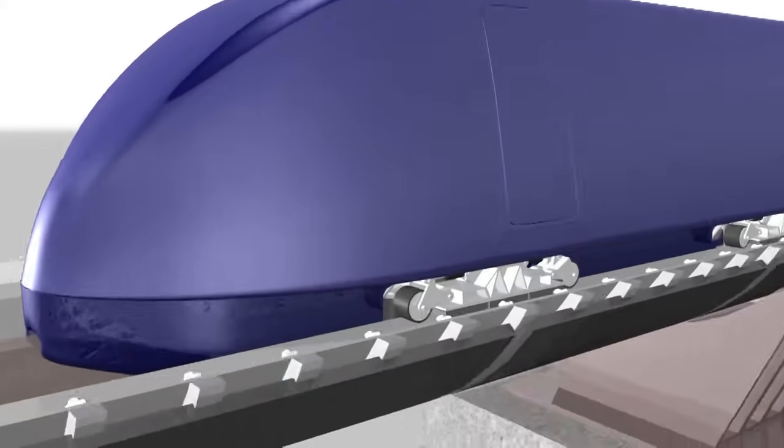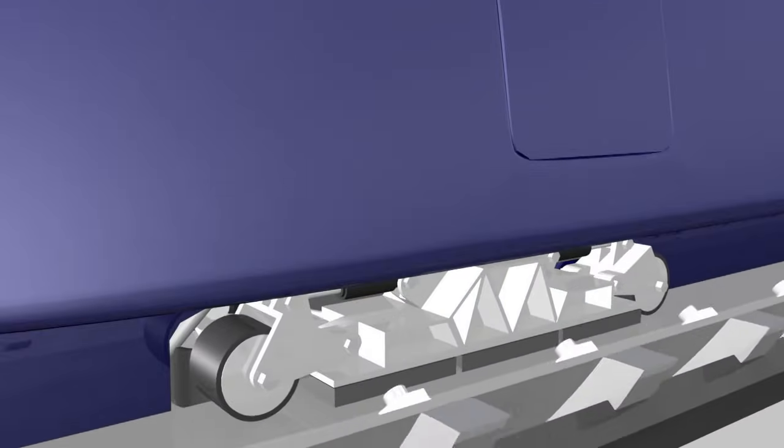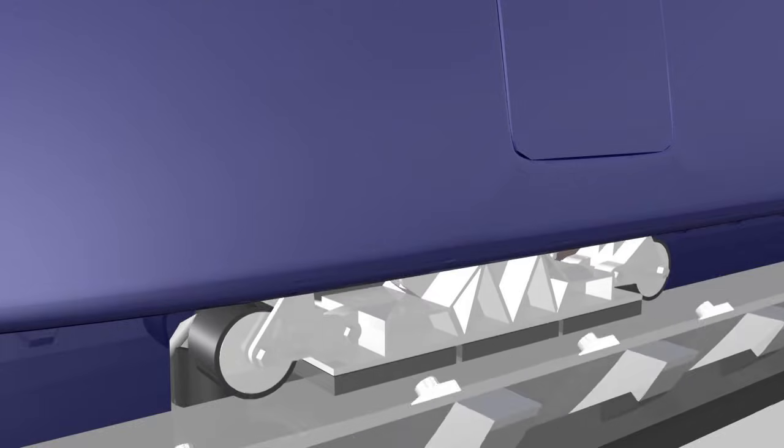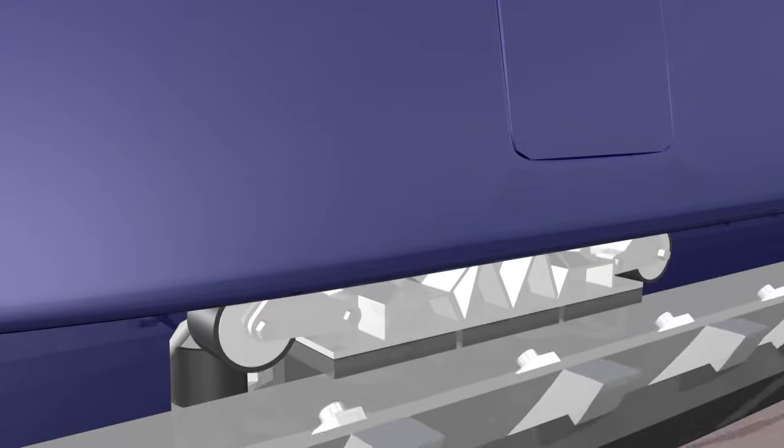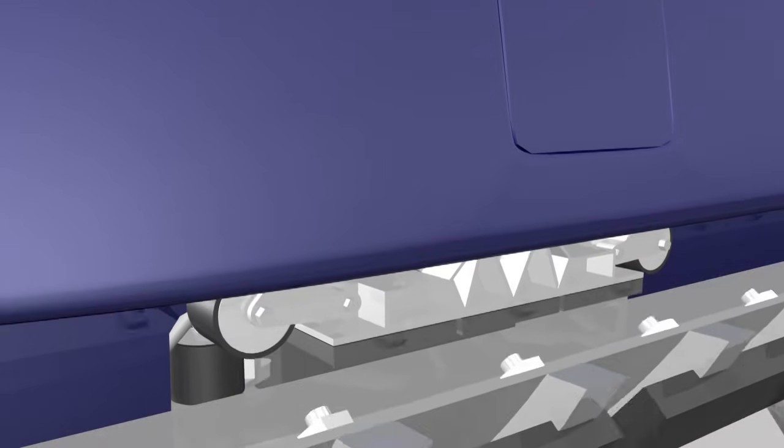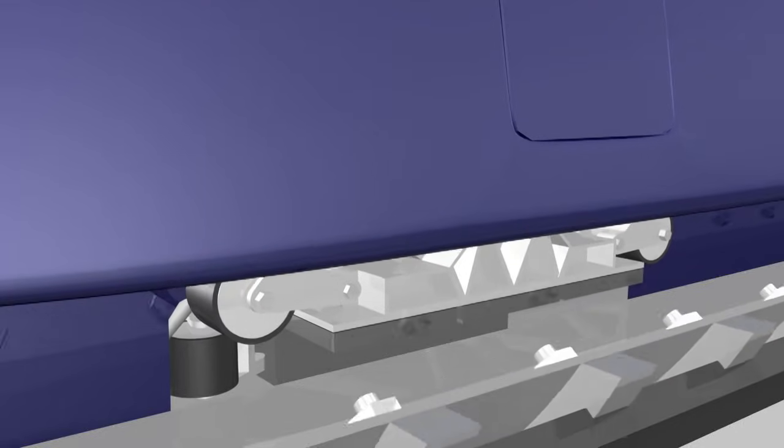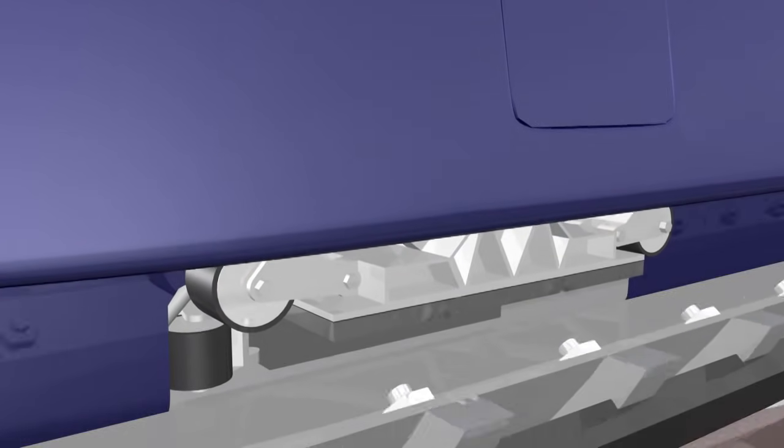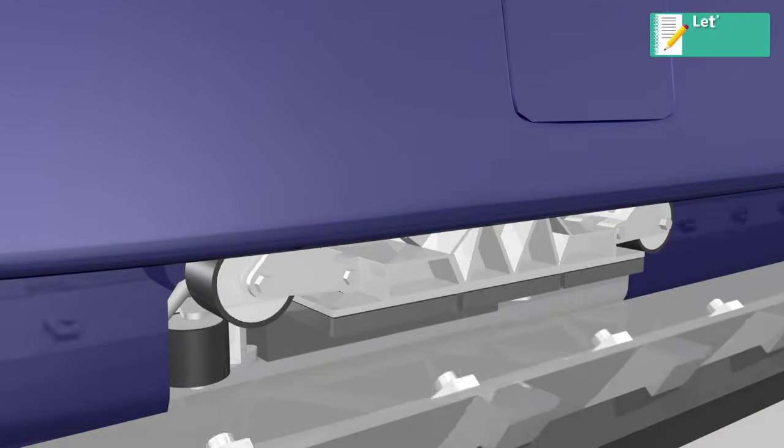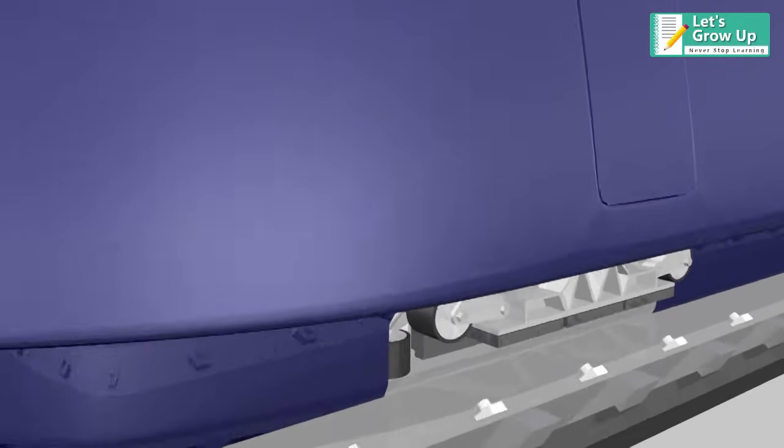One of the key features of the Hyperloop vision is the levitation phenomenon, where the gravitational force on an object is counteracted by an upward force. The object is able to levitate without touching anything else, such as the track.